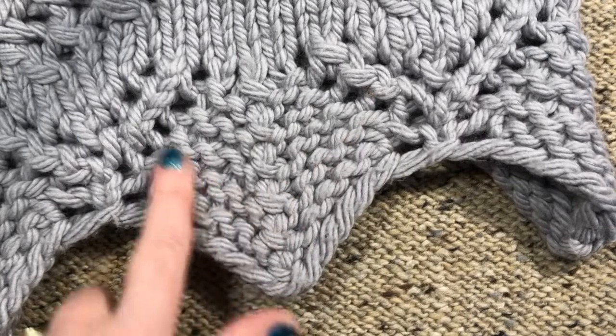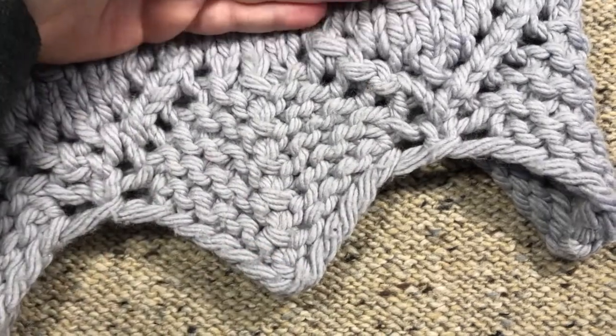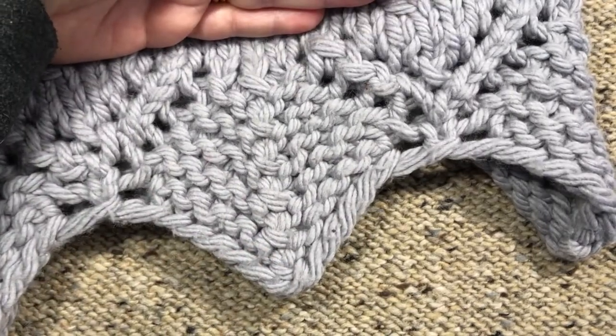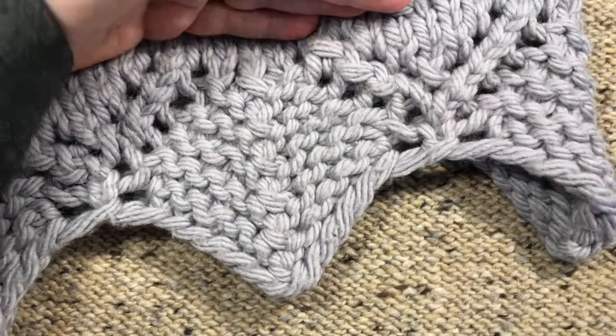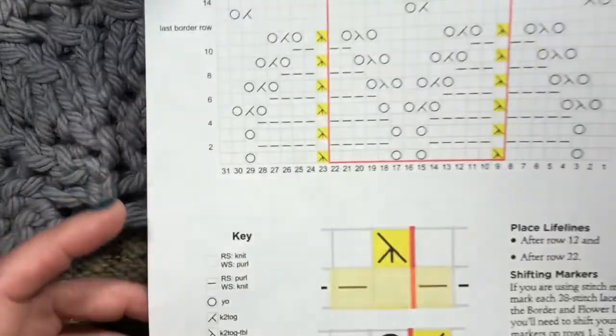We've got garter stitch in one section and a little stockinette because the border ends here, and making a little lace pattern cast on and knit up. So let me show you the chart for that.